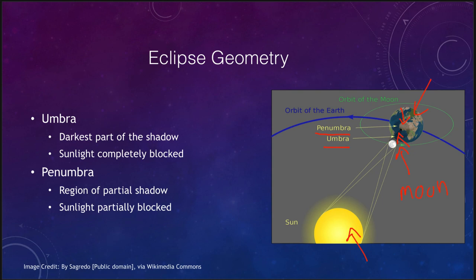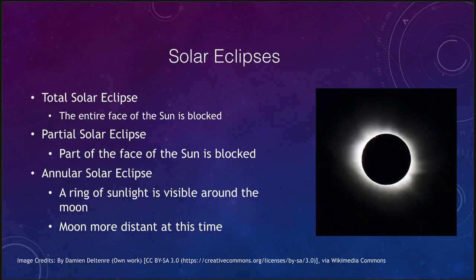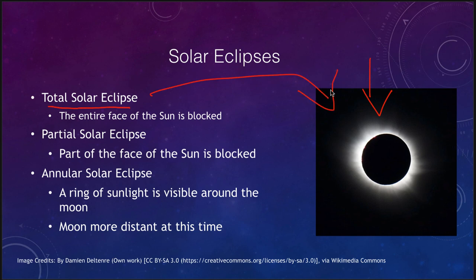Now let's look at the types of solar eclipses. There are three types. The first is a total solar eclipse, shown in the image here. That is when the entire face of the sun is blocked out and we do not see the surface of the sun at all — all we can see is its atmosphere, but the entire face of the sun is blocked out.